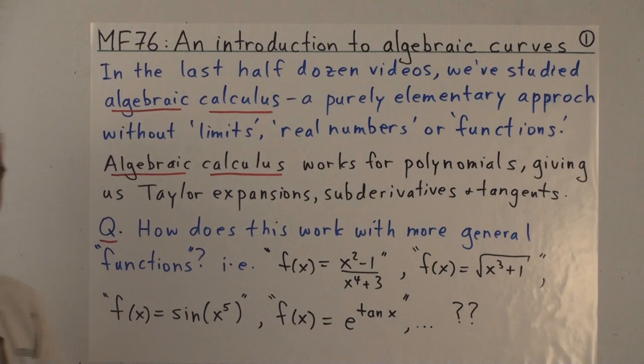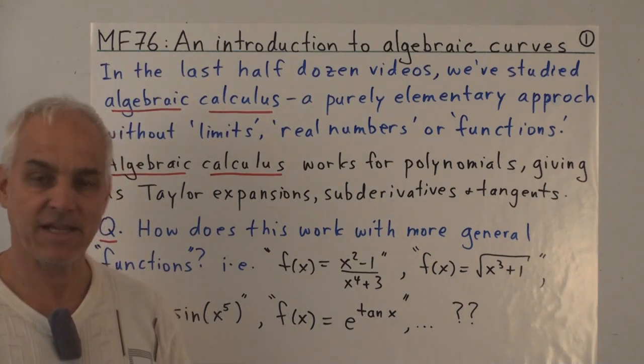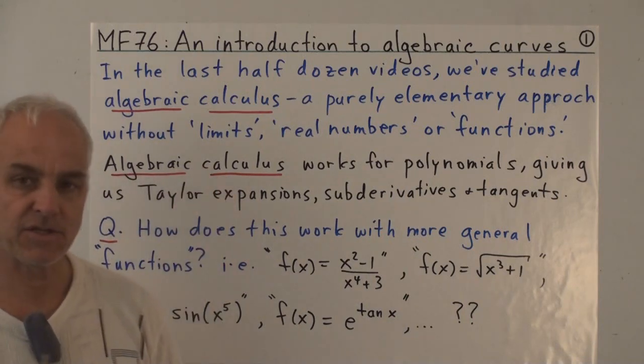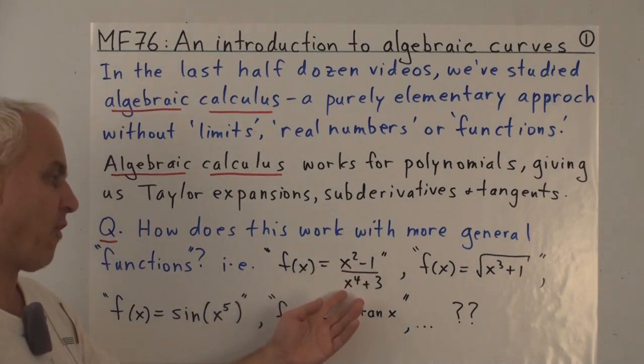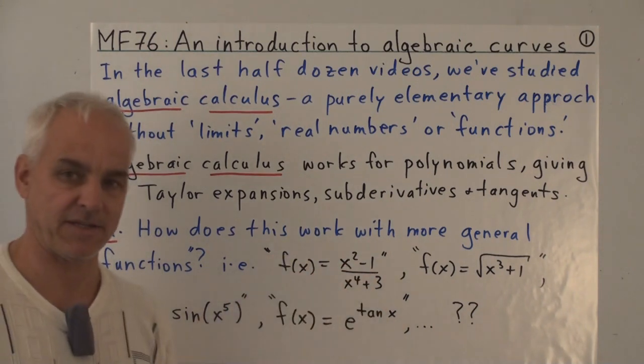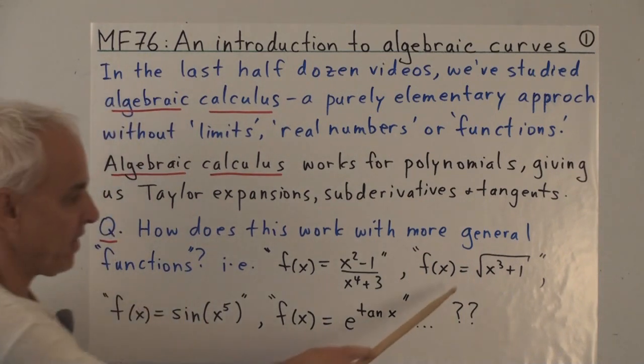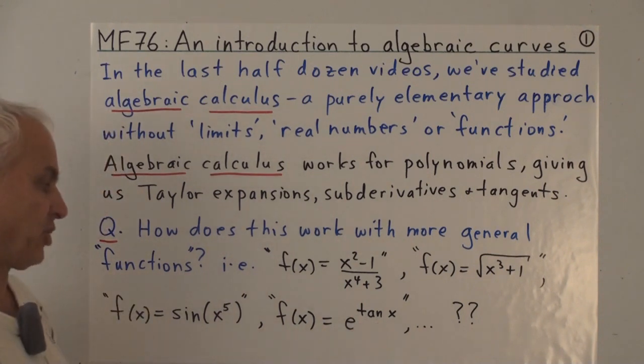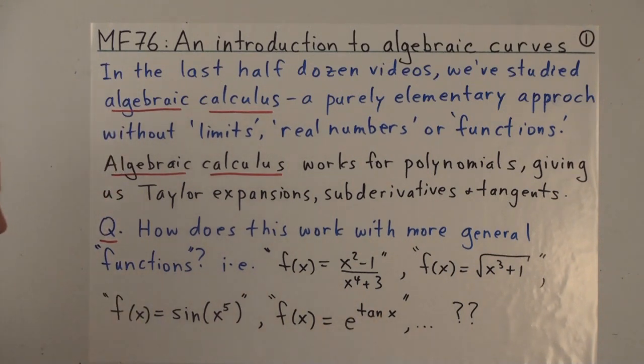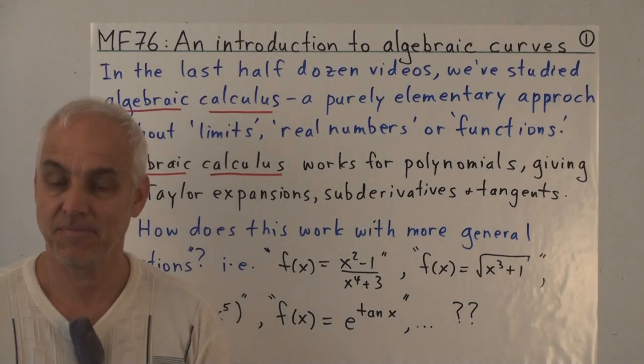A natural question that many of you probably have is: how are we going to extend this algebraic calculus to more general functions? For example, functions like x squared minus 1 over x to the 4th plus 3, or the square root of x cubed plus 1, or maybe sine of x to the 5th, or perhaps e to the tan x. Does this algebraic approach to calculus work for these kinds of things? If so, how?